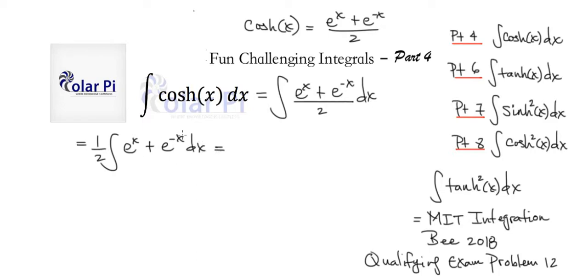And then we can split this here into two integrals as we did in the last video and write one half integral of e to the x dx and then plus one half integral of e to the negative x dx.